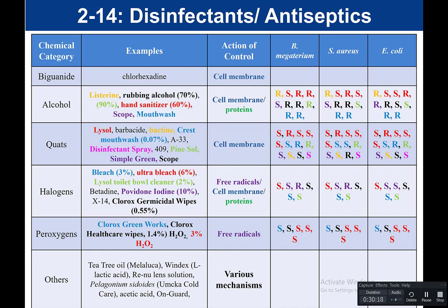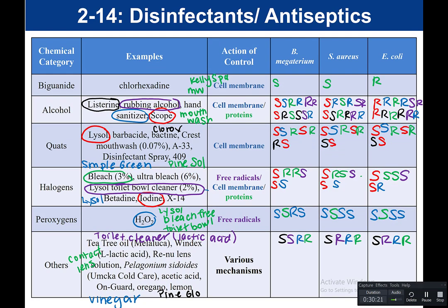Looking at another semester's data — more handwritten but color-coded similarly — you see a very similar pattern. The peroxygens are again very effective. Contact lens solution is not very effective. Vinegar was not very effective — resistant. The toilet bowl cleaner that contained lactic acid was not very effective; it did inhibit Bacillus megaterium but was not effective against Staph aureus or E. coli.